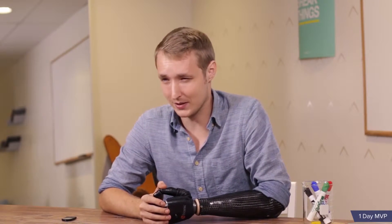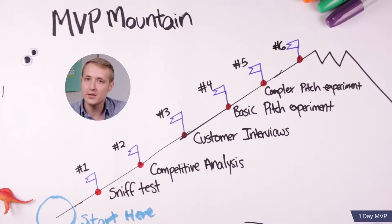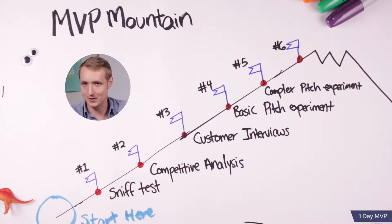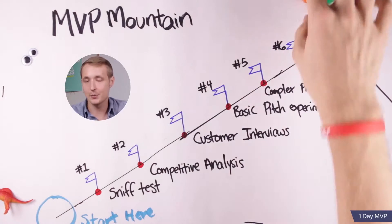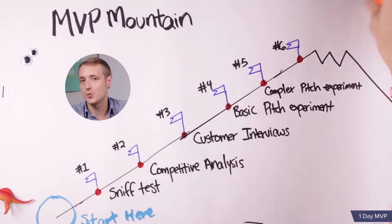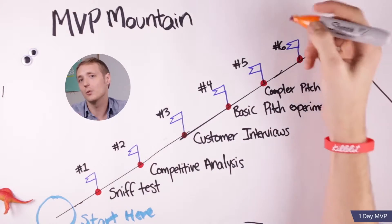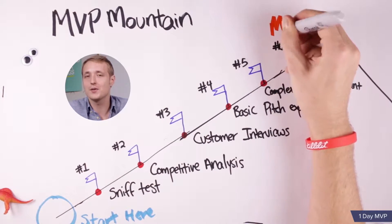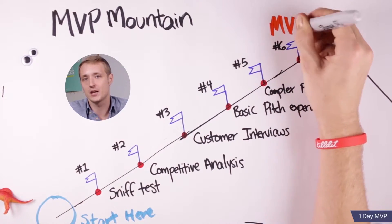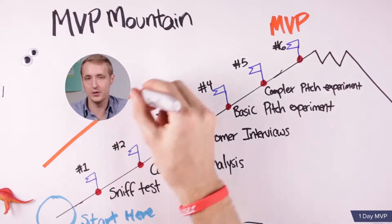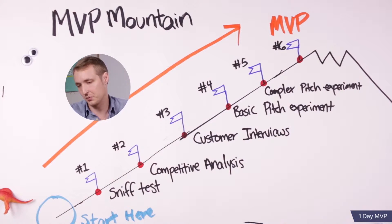I'm teaching this class in a progressive manner. I call it the MVP mountain. As we climb the MVP mountain, we're gonna pass several checkpoints — six, in fact — and each checkpoint represents a lean test that we're gonna run. If you keep passing each checkpoint, you'll keep going up and finally reach the top where your idea is awesome, green lights, go out and build it.